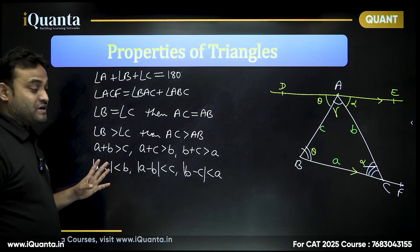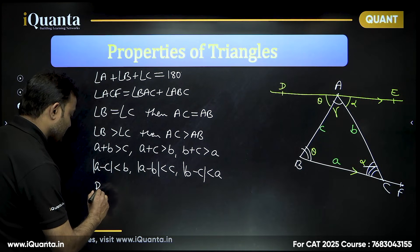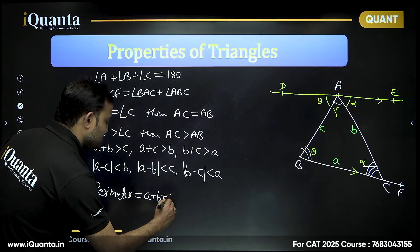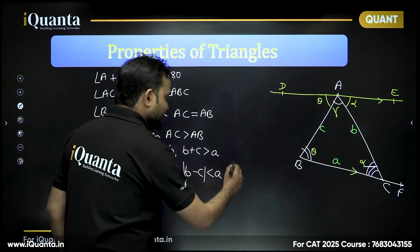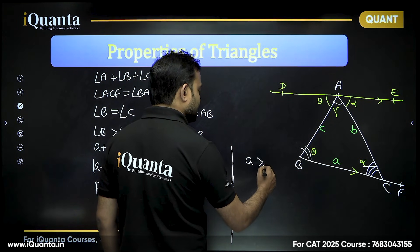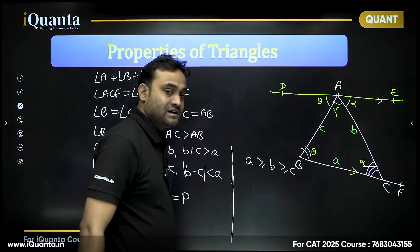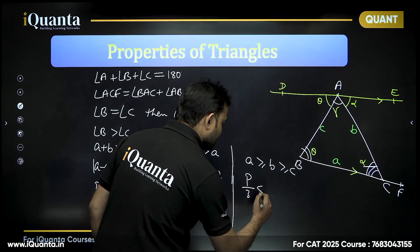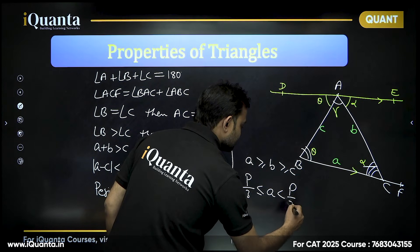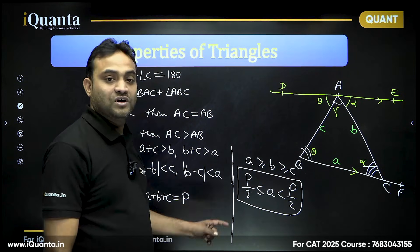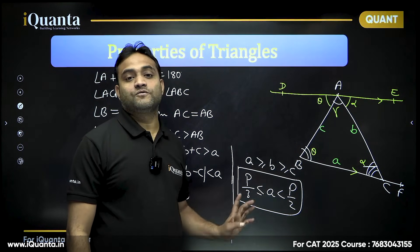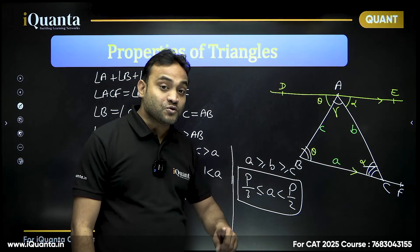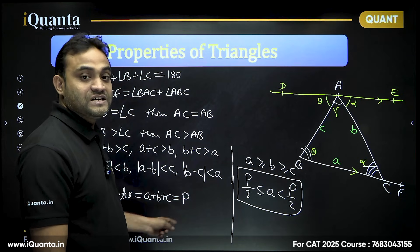The perimeter of the triangle equals a plus b plus c, which we call p. If a is the largest side, then the largest side is always greater than or equal to one-third of the perimeter and less than half the perimeter — that is, p/3 ≤ a < p/2. This is a very important point that can be derived from the properties of sides.